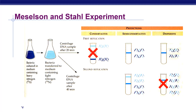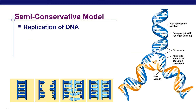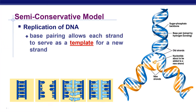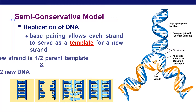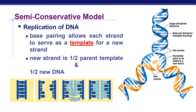Based on the observations and experimental results, Meselson and Stahl concluded that DNA molecules replicate semi-conservatively. In the semi-conservative model of DNA replication, base pairing allows each strand to serve as a template for a new strand. The new strand is half parent template and half new DNA. Here you can see a DNA double helix — the old strand with its sugar-phosphate backbone and base pairs joined by hydrogen bonds, while the yellow ones represent the new strand.